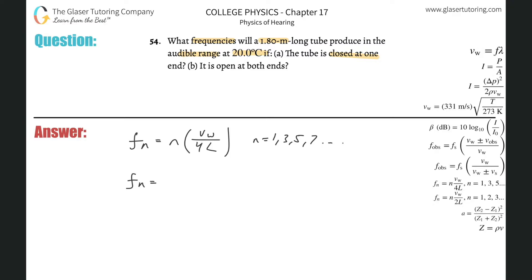So what I'm going to do is a substitution here. So we're going to have 331 times the square root of the Kelvin temperature over 273, all divided by 4 times the tube length.